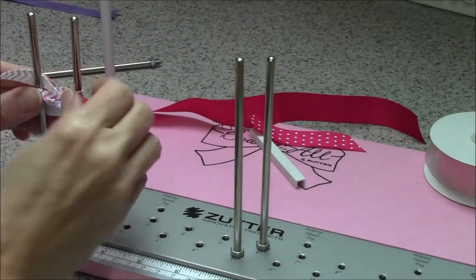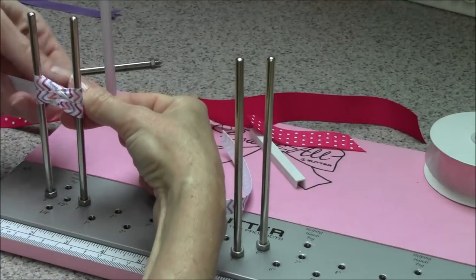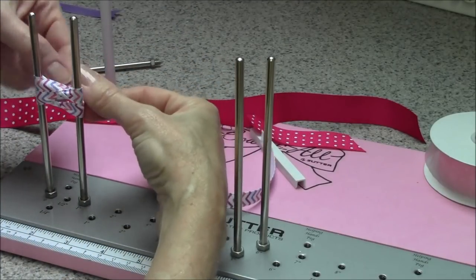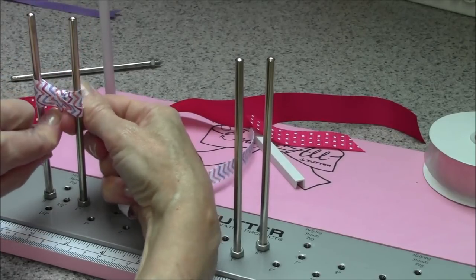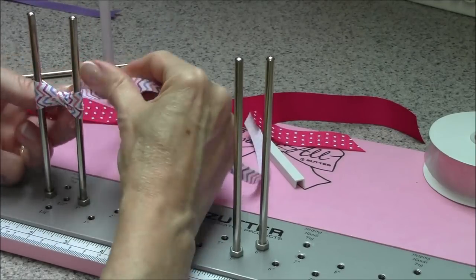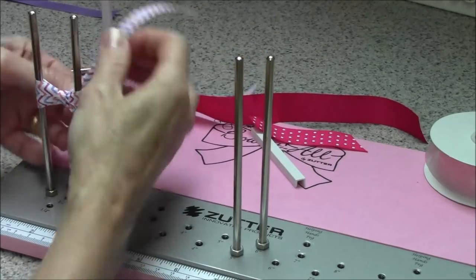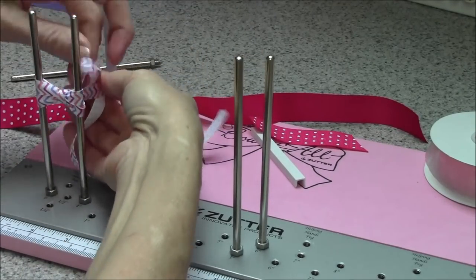And I'm twisting just like we did on the other bows. Now even though this is a narrower grosgrain, because it's such a small bow, I'm still going to fold that center in half to make it a narrower center.